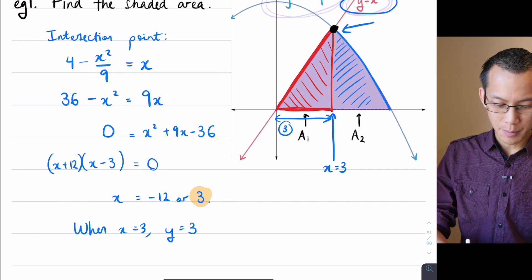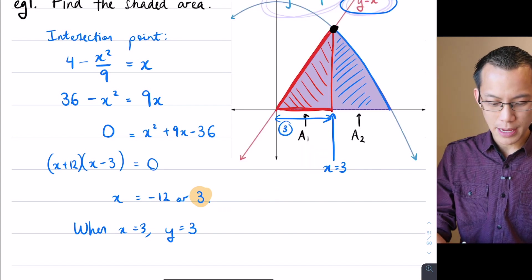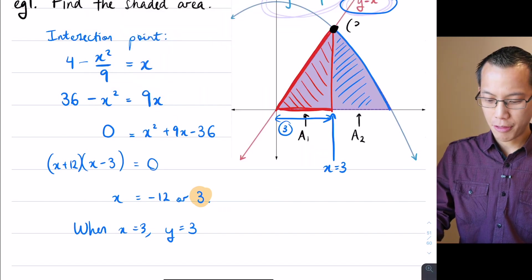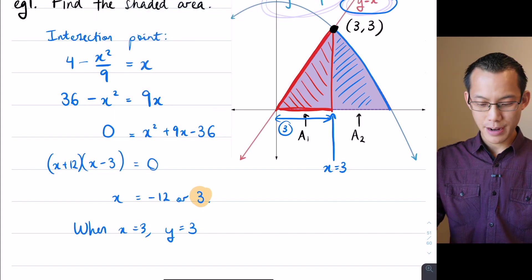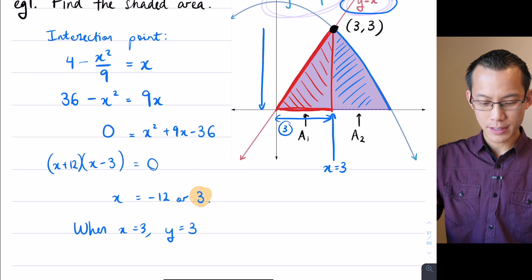So now, oopsie daisy, I didn't mean to move that. Now I've got coordinates. Yippee, I'm going to write that in. 3, 3. So we worked out that the base was 3, and the height of this is also 3.